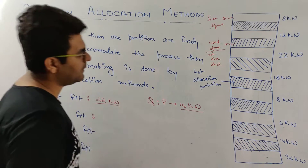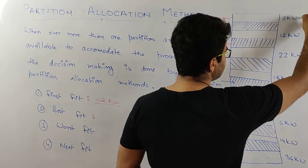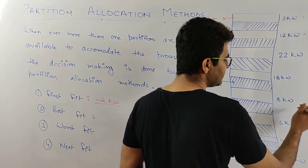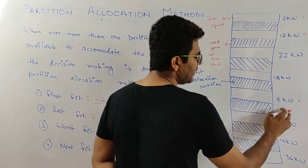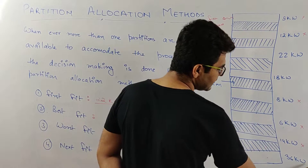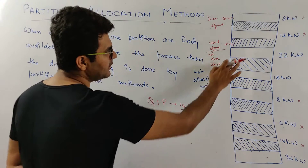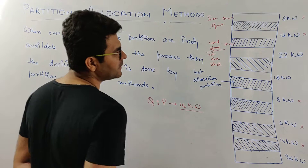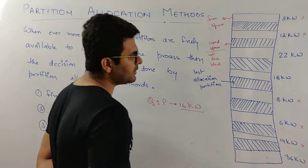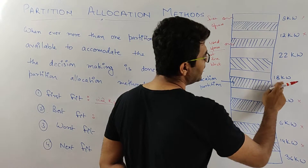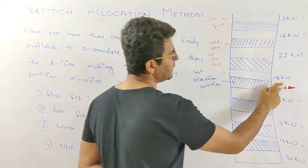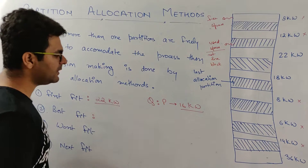For best fit, with a process of 16k words, the available blocks are 8k, 12k, 22k, 18k, 8k, 6k, 14k, and 36k words. There are three blocks in which the process can be accommodated. By the definition of best fit, we need to find the partition with the minimum free space after allocation. That block is the 18k word block, leaving only 2k words of free space.